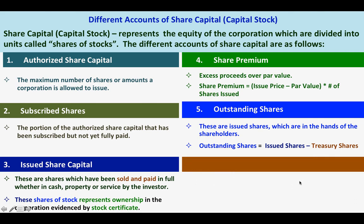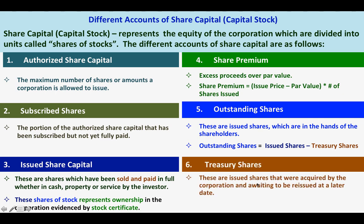What are treasury shares? Treasury shares are issued shares that were acquired by the corporation and are awaiting to be reissued at a later date. If the corporation has issued share capital, it becomes outstanding shares because it is in the hands of the investors. If the corporation bought the shares back from investors, that is called treasury shares, which is deducted from the issued shares to give the number of shares outstanding. The determination of outstanding shares is important because dividends are declared based on outstanding shares.